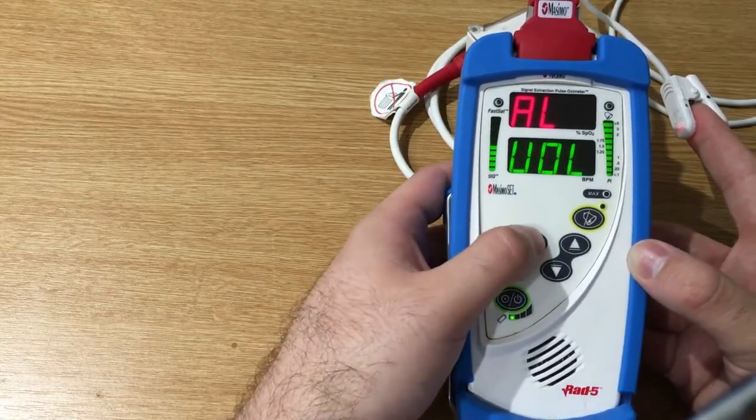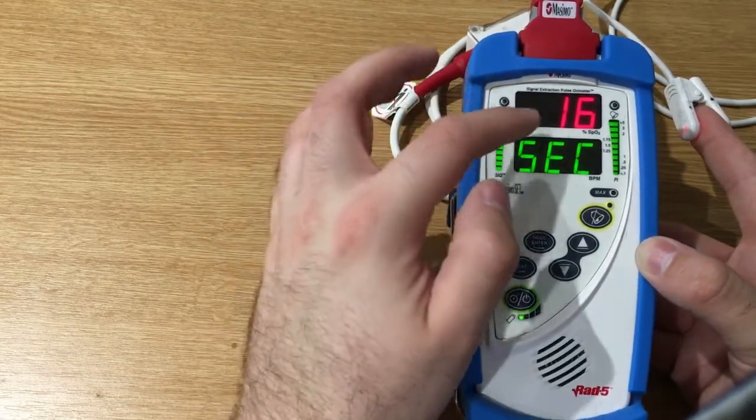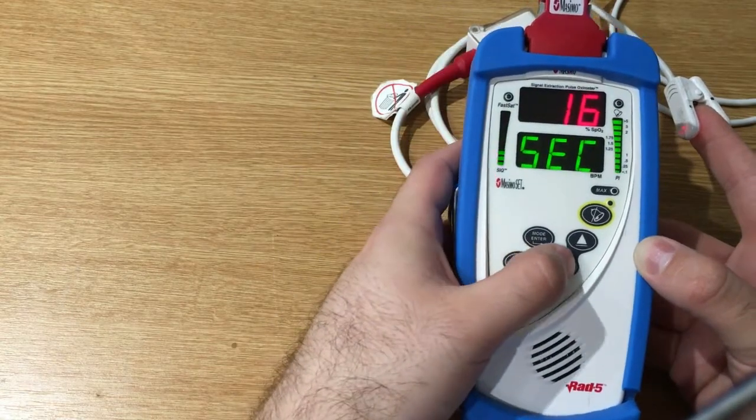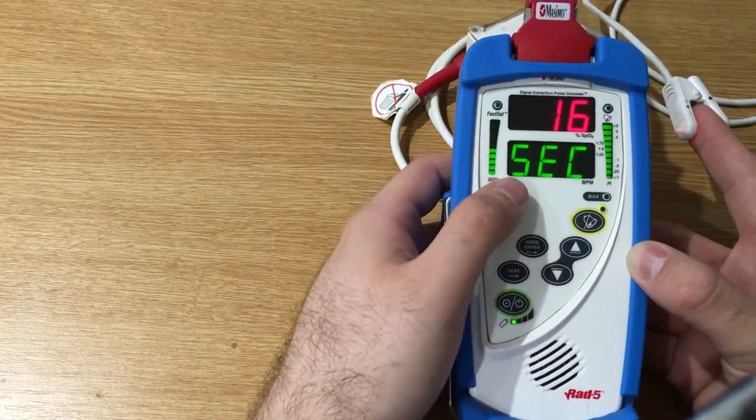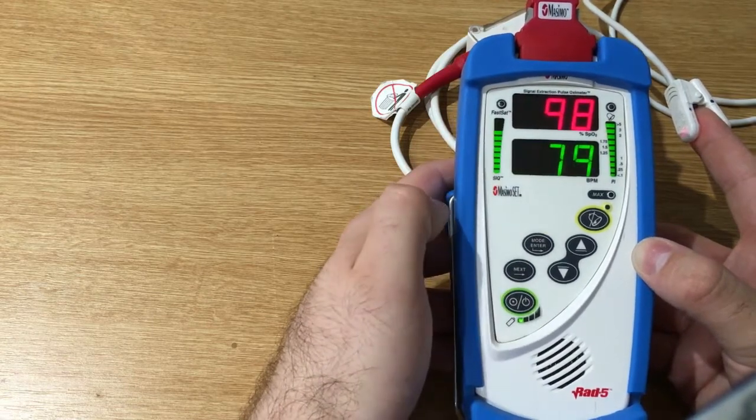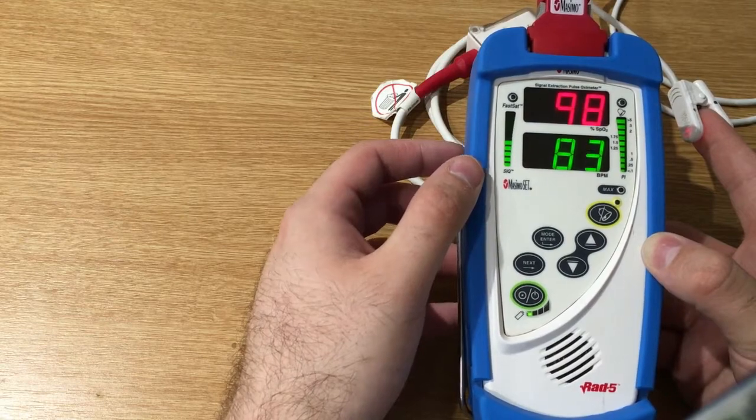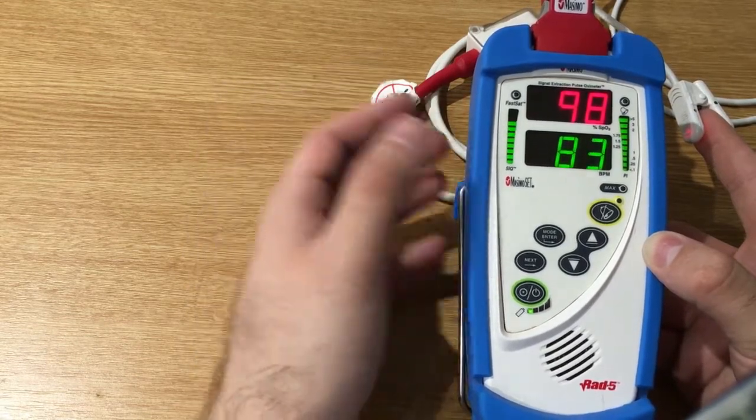Pressing this button we move into another menu, and here we can select the averaging time. This can go down to two seconds and allows for high fidelity pulse oximeter performance.